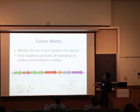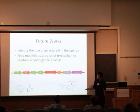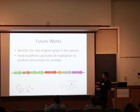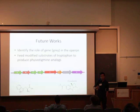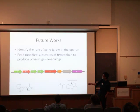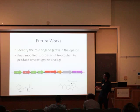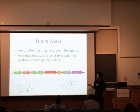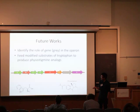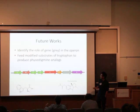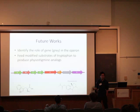Future work includes identifying the role of one uncharacterized gene. In our bioinformatics search we found a gene cluster, and according to our in vitro assay only seven genes were sufficient to convert tryptophan to physostigmine, but when we knocked out this additional gene, physostigmine production was abolished — so we don't yet know its function. We also want to try feeding modified tryptophan substrates to produce physostigmine analogs, for example by halogenating tryptophan with a chlorine group and feeding it into E. coli to see what kind of physostigmine analog is produced, since some drugs contain halogens that may improve medicinal value.